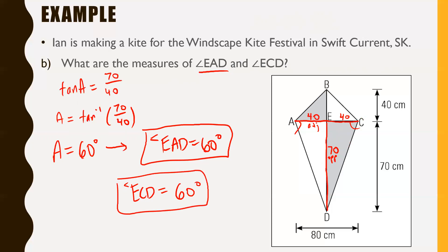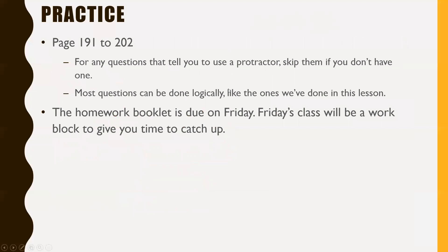That's how these questions work with kites — just break it down, make sure you label the side lengths. Notice that with quadrilaterals — four-sided shapes — we often just break them down into triangles anyway; that's usually the easiest way. For practice, do pages 191 to 202. For any questions that tell you to use a protractor, just skip them if you don't have one. Most questions can be done logically, just by observing the whole situation.